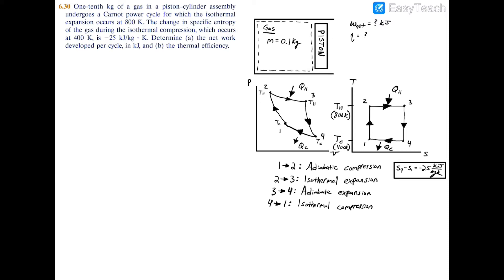Process 2-3 is isothermal expansion. We have heat transfer coming in, we're at T_hot, and T2 = T3 since it's isothermal. There's a reduction in pressure and an increase in volume during this expansion.